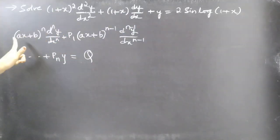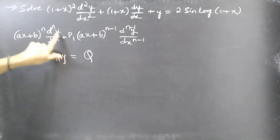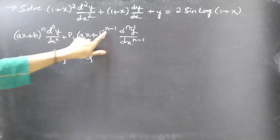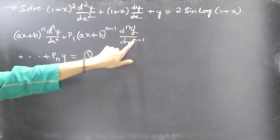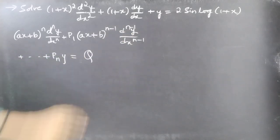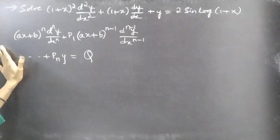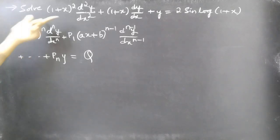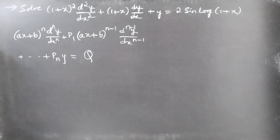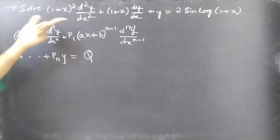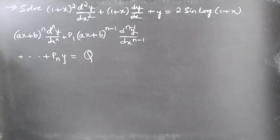We are given a differential equation of the form (ax + b)ⁿ · dⁿy/dxⁿ + p₁(ax + b)ⁿ⁻¹ · dⁿ⁻¹y/dxⁿ⁻¹ + ... + pₙy = Q, which is a Legendre's equation. We are going to solve this problem by reducing the given Legendre's equation to a linear differential equation with constant coefficients by making a substitution.